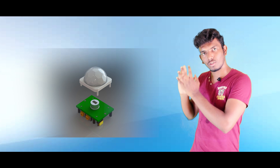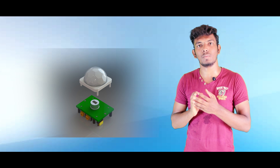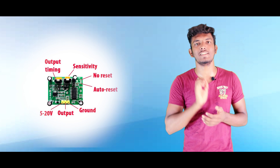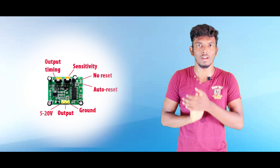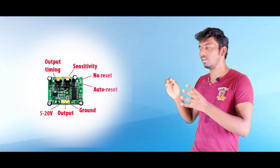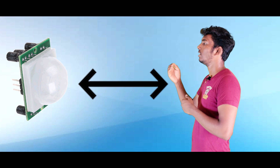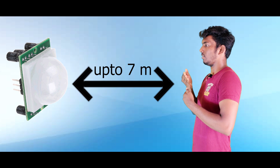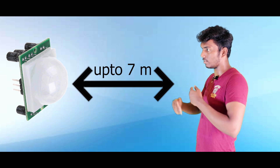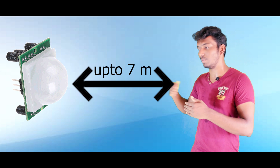If you look at this, these are the three main parts. If you look at it, there is a sensitivity tuner. What is this sensitivity tuner? That's the distance. If we tune it, it can reach up to 7 meters. That's how we can measure and adjust that sensitivity.